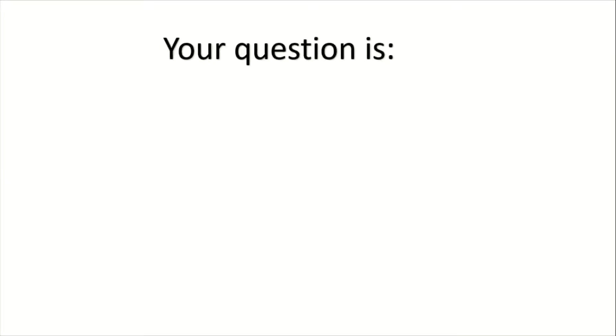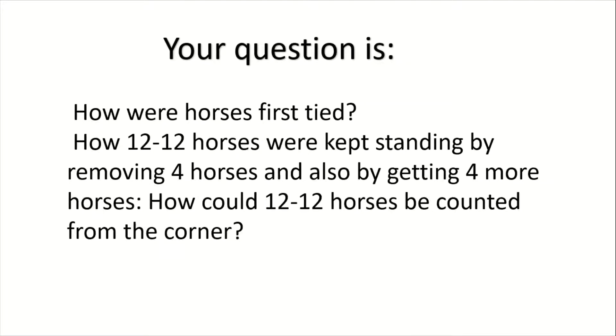Here is your question: How were the horses first arranged? After removing four horses and adding four more horses, how could twelve horses still be counted from each corner? Your time starts now.